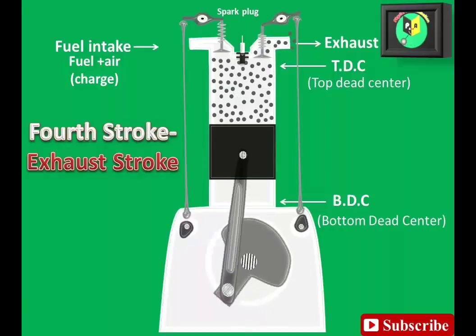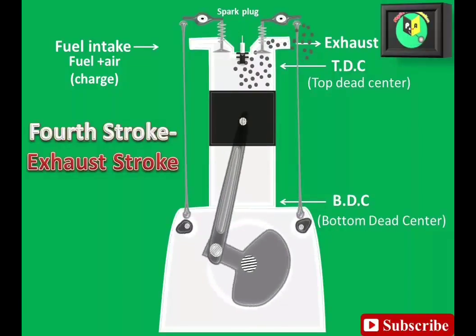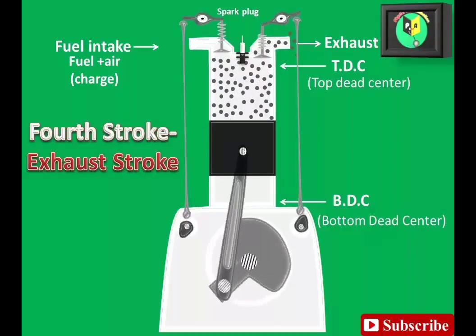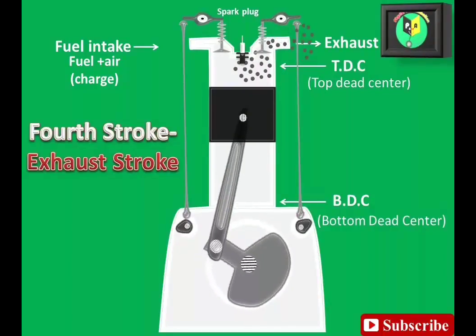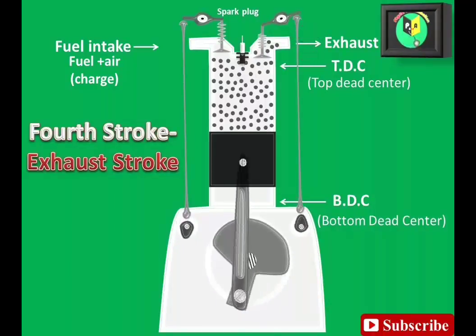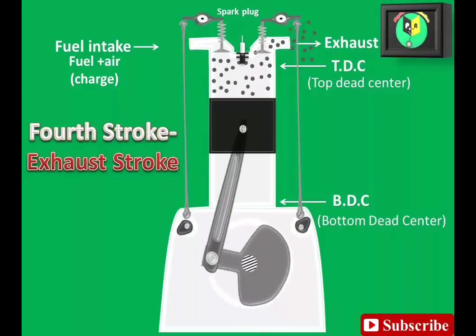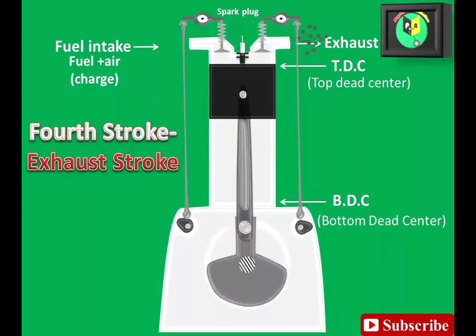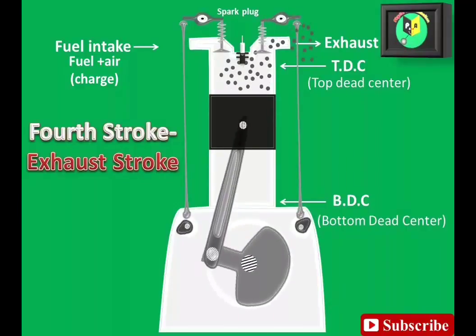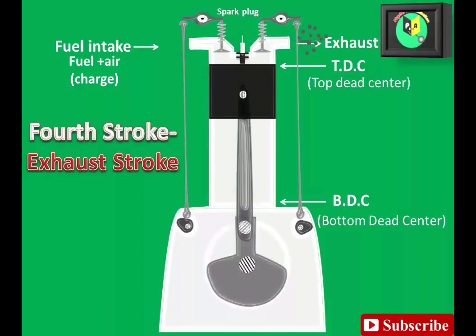As the piston reaches TDC again, the inlet valve opens and fresh charge is taken in during next downward movement of the piston, and the cycle is repeated. The engine is known as four-stroke cycle engine because one power stroke is achieved in every four strokes of the piston or two revolutions of the crankshaft.